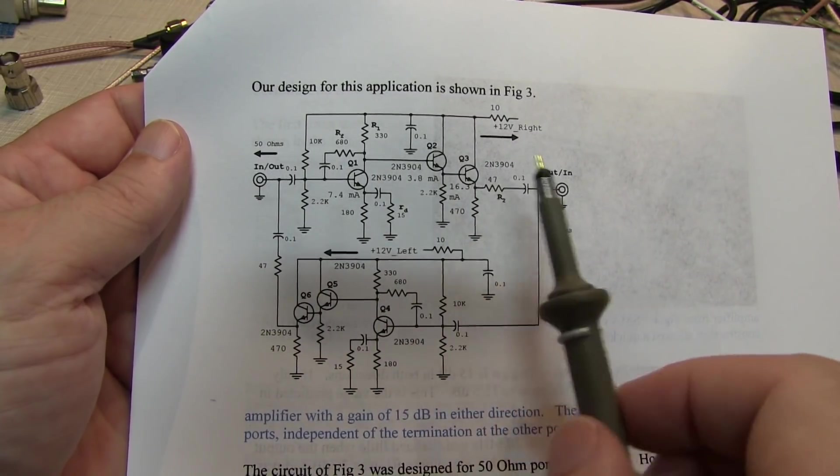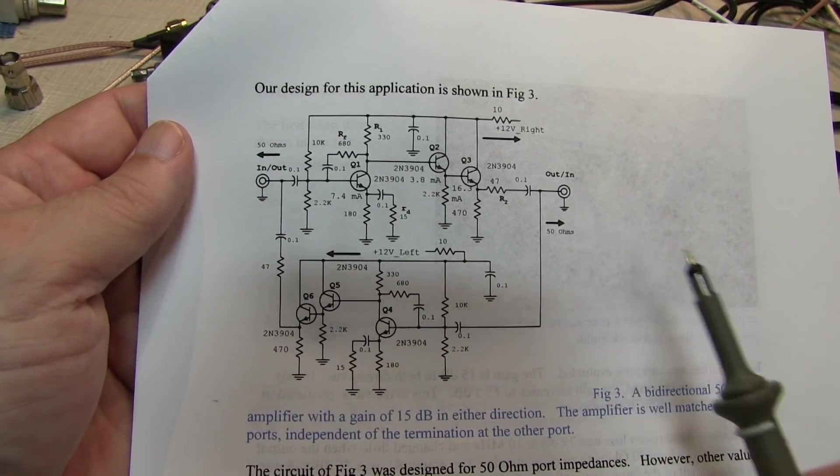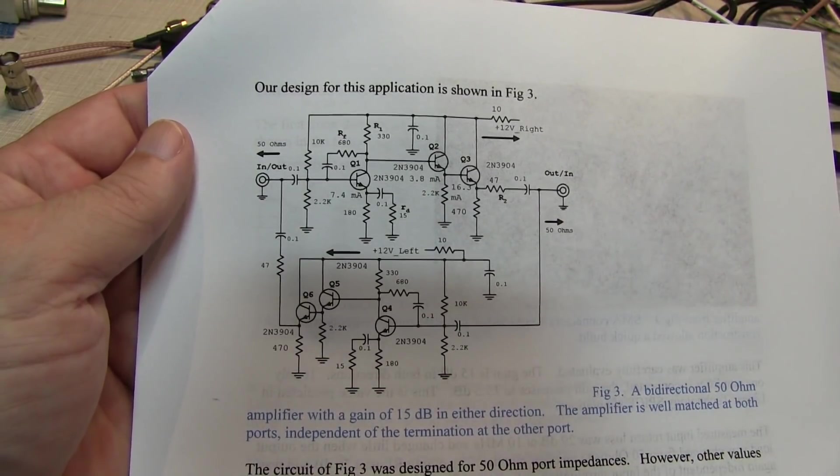So this could be used on either side of, say, an IF filter for both a transmit path and a receive path. Hence the name bidirectional amplifier.